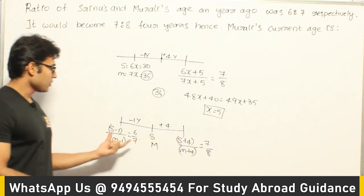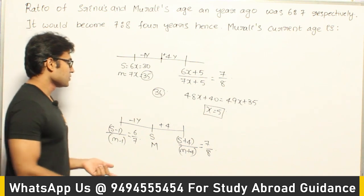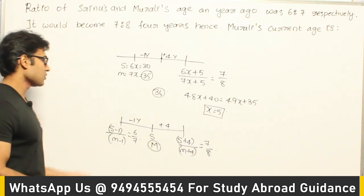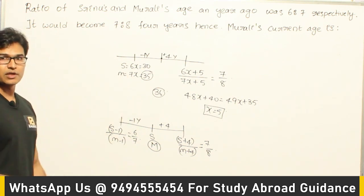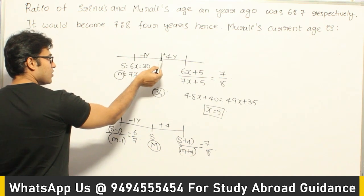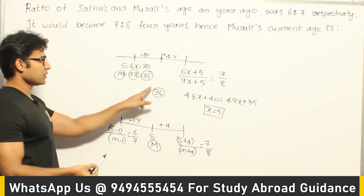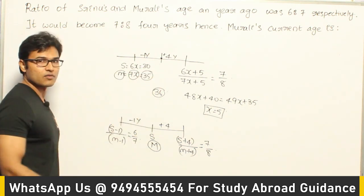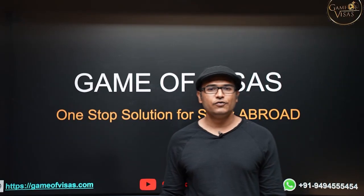Solving these two equations gives M = 36, the present age of Murali. If you use the first method, be careful: 7X represents Murali's age 1 year back, not his current age. You need to add 1 year forward to get the present age, which is 36.